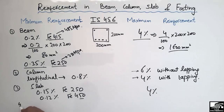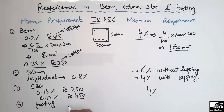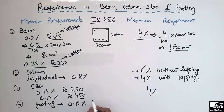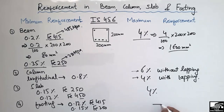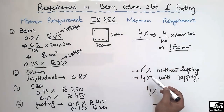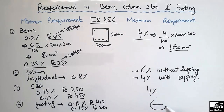The fourth structural member is the footing. For the footing, the minimum reinforcement should be 0.12 percent if using Fe415 grade steel and 0.15 percent of the footing area if using Fe250 grade steel. For maximum reinforcement in footings, there is no fixed range as there is for beam, column, and slab — the range varies and is not a single defined value.